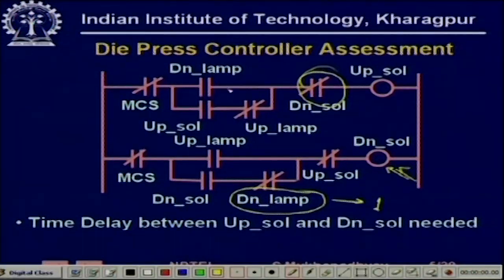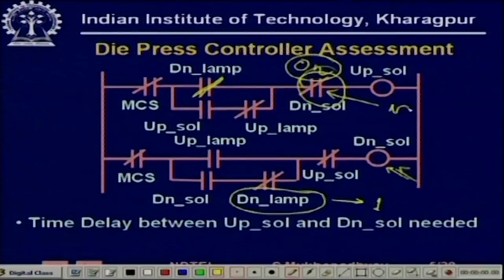At this position the down lamp is on and the down solenoid has become off. The down lamp is on, and because the down solenoid is off this NC contact is on, so immediately the up solenoid becomes on. For a die press — for example pressing sheet metal into a particular form — you do not want the die to immediately go back up the moment it comes down. You want it to probably wait a little while and then go up for the next stamp.